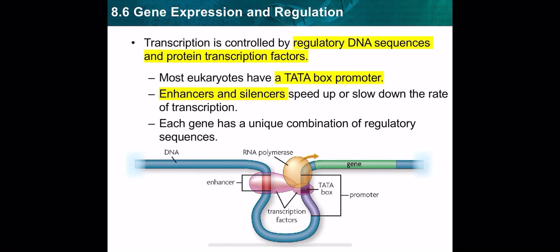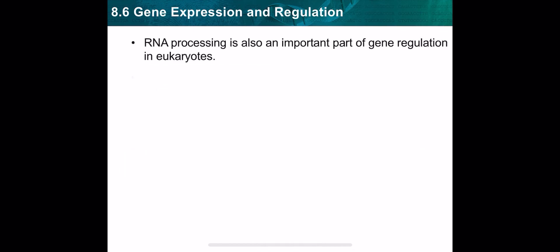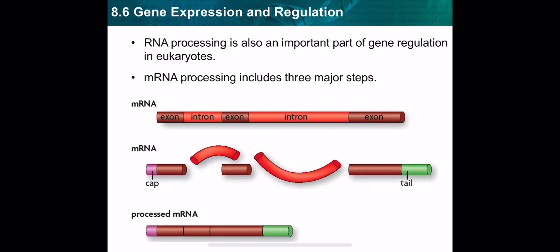Another way of regulation is RNA processing. As you know, transcription takes place inside the nucleus. After formation of mRNA, the mRNA must be processed before leaving the nucleus to start translation. The mRNA should pass through three major steps.